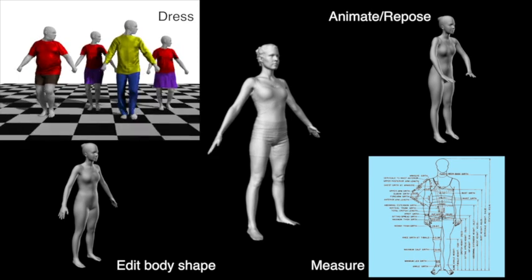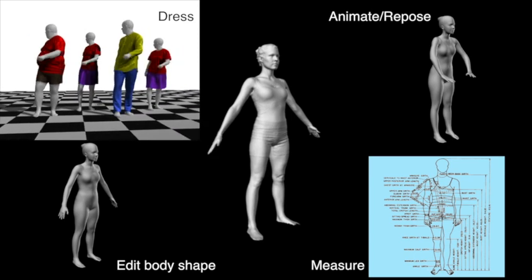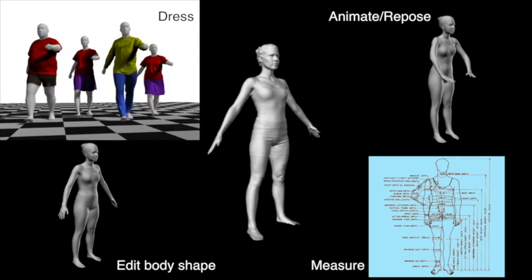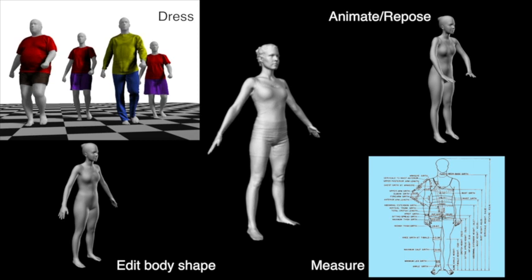Finally, we want to automatically dress scanned bodies in clothing that fits, and to animate this clothing with realistic deformations. All of this needs to happen from a single scan, completely automatically, without markers or manual intervention. The results must be of high accuracy and high realism, capturing natural human body shape and pose variation.